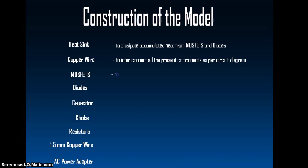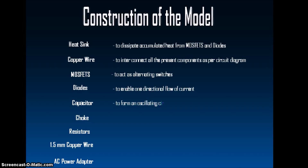MOSFETs are present to act as alternating switches, while diodes are present to enable one-directional flow of current. Capacitors are there to form an oscillating circuit while the choke resists AC current. Resistors are there to regulate the opening and closing of the MOSFET gates.